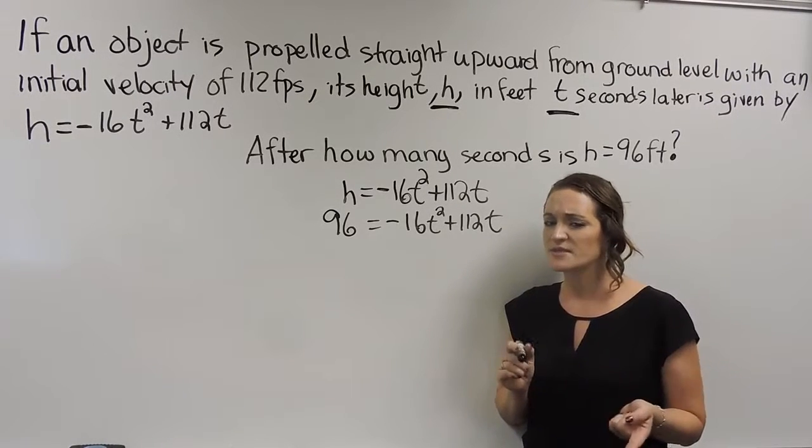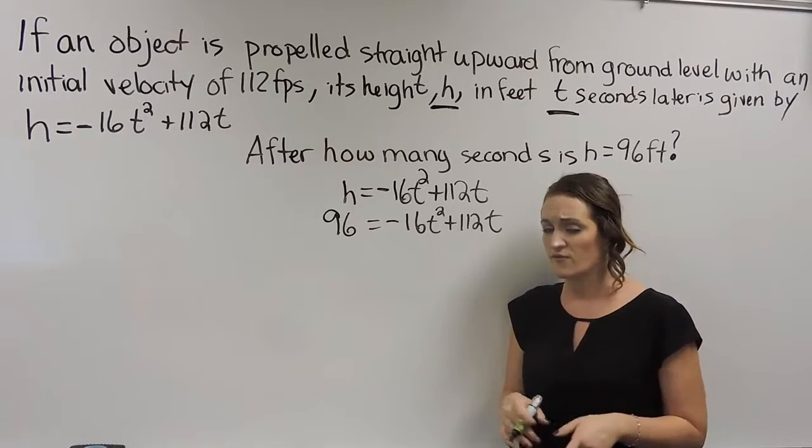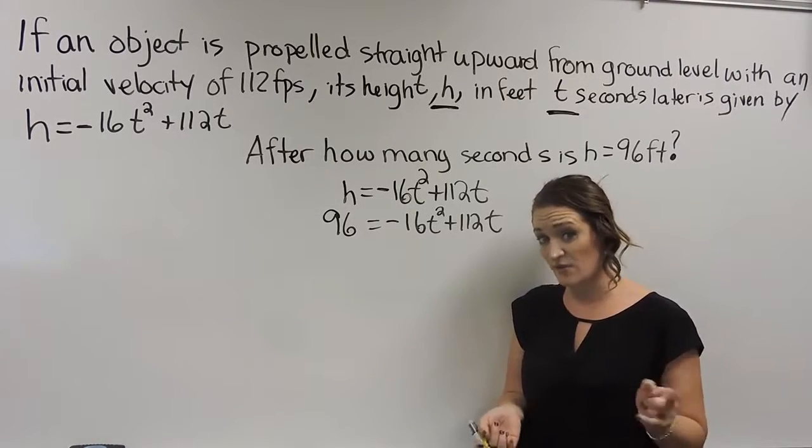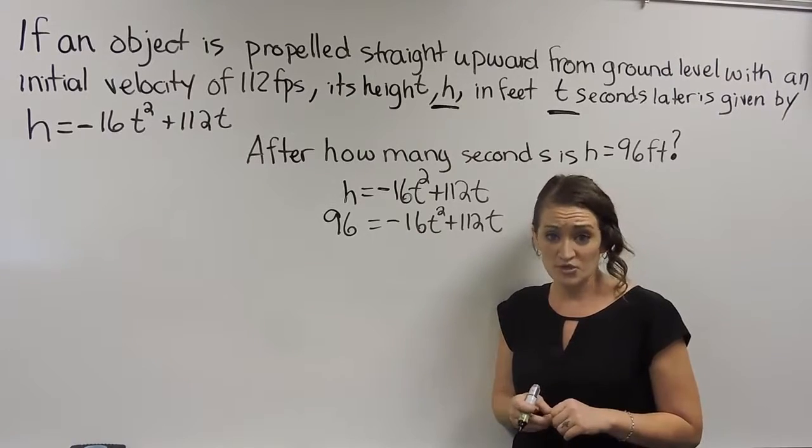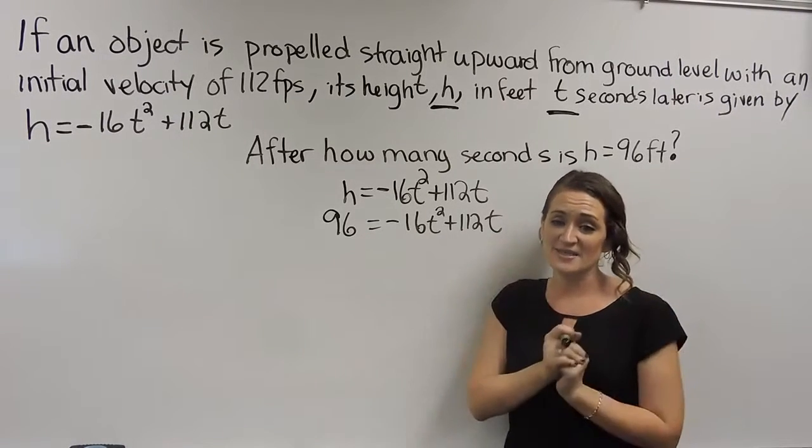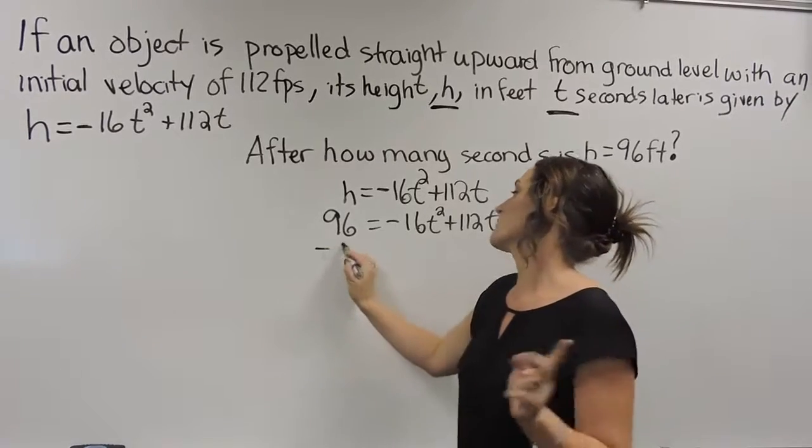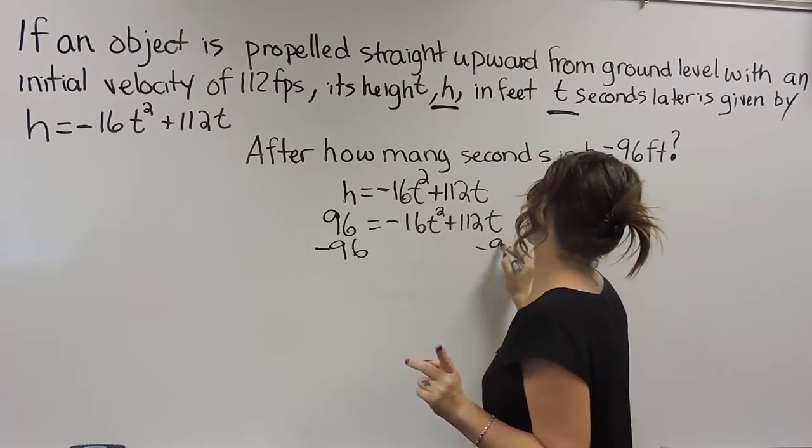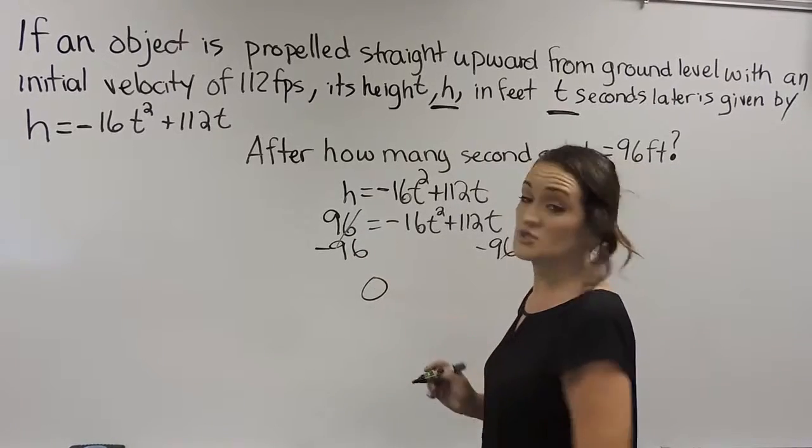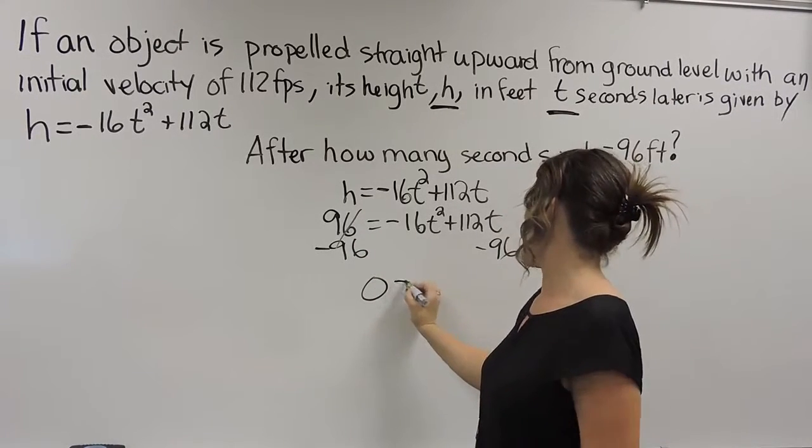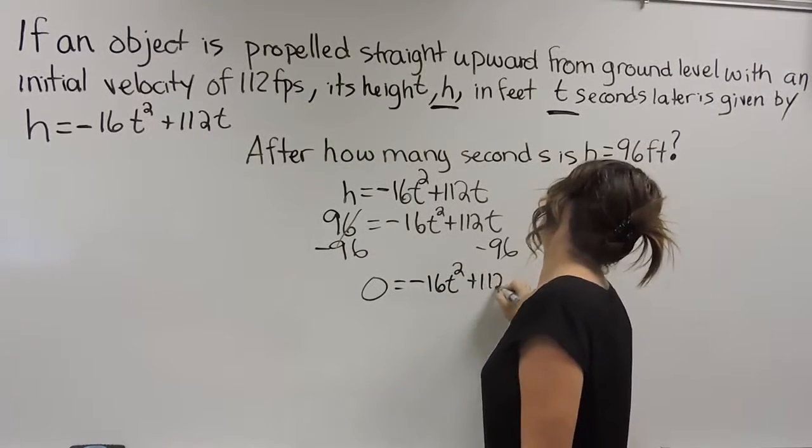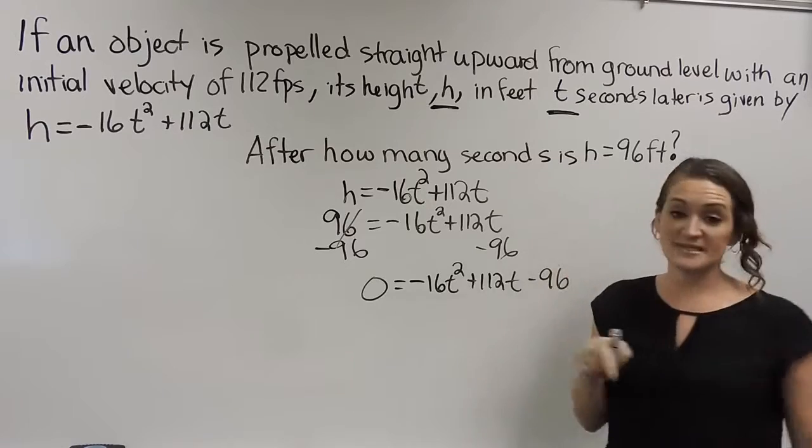If we can factor this thing, it's going to make life easier for us. But if I'm going to try and factor this first off, it needs to be in proper quadratic form, which means everything needs to be on one side. I need to get this thing set equal to zero. So what I'm going to do is I'm going to subtract 96 from both sides. And that's going to put it in proper quadratic form for me. So here I'll have 0 = -16t² + 112t - 96.